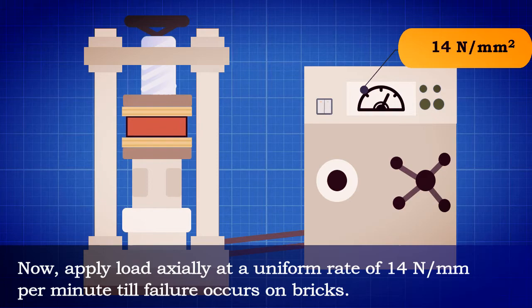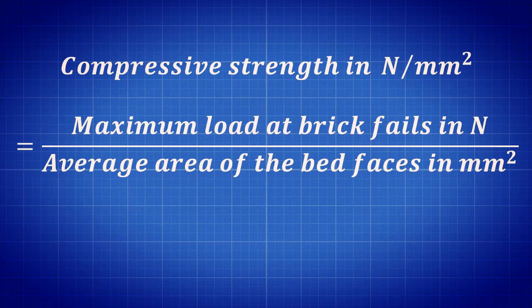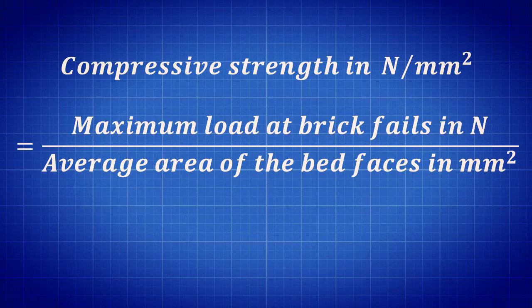Note the maximum load at which the brick fails. Thus compression strength in Newton per millimeter square is calculated by dividing maximum load at which brick fails in Newton with average area of the bed faces in millimeters square. This test is repeated for a number of specimens.